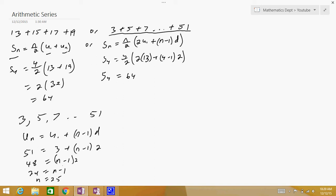Now that we know what n is, we can plug it into one of the formulas. So the sum of the first 25 terms equals 25 divided by 2, times u1, which is 3, plus the last term, which is 51. Put that together, 51 plus 3 is 54, 54 divided by 2 is 27, times 25, and you get your answer.